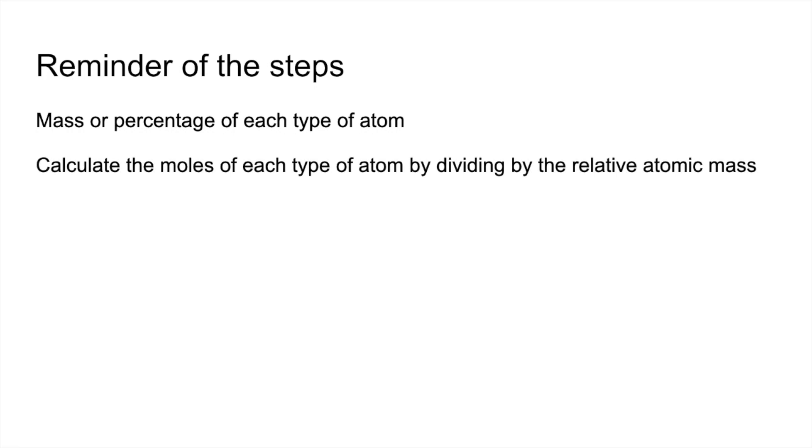You then calculate the moles of each type of atom by dividing by the relative atomic mass, and then you divide all of the moles by the smallest amount of moles and that gets you the ratio.